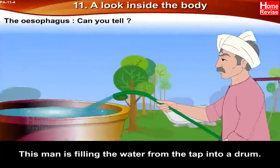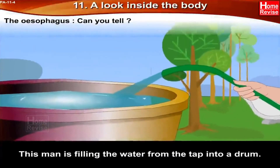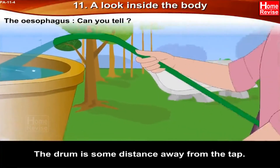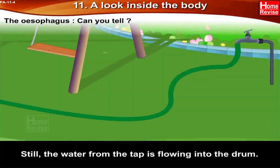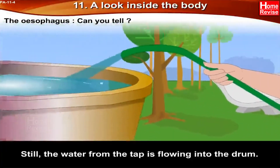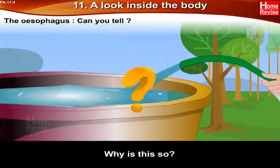This man is filling water from a tap into a drum. The drum is some distance away from the tap, yet the water from the tap is flowing into the drum. Why is this so?